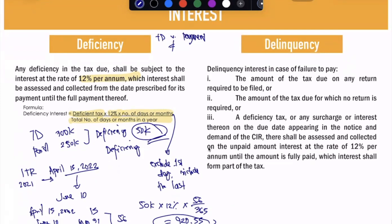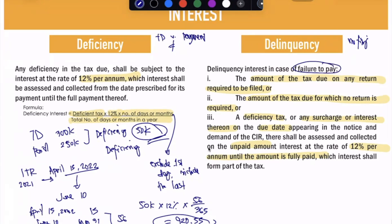How about delinquency? When we say delinquency, there is a failure to pay the amount of tax due on a return required to be filed, or the amount of tax due where no return is required to be filed, or there is a deficiency tax or any surcharge or interest thereon on the due date appearing in the notice and demand of the CIR. There shall be assessed and collected on the unpaid amount 12% per annum until the amount is fully paid.